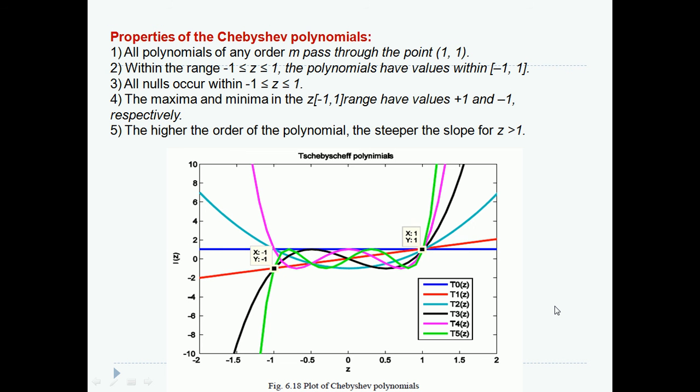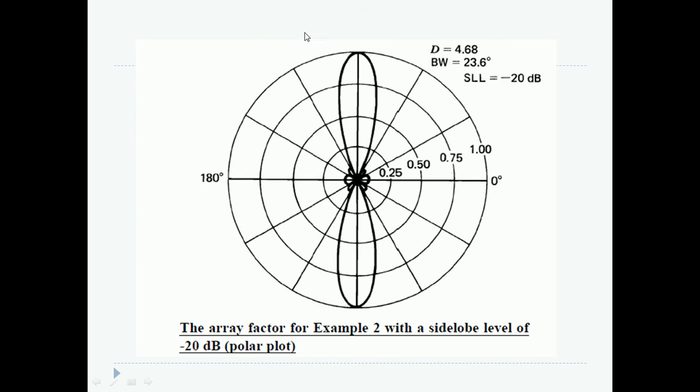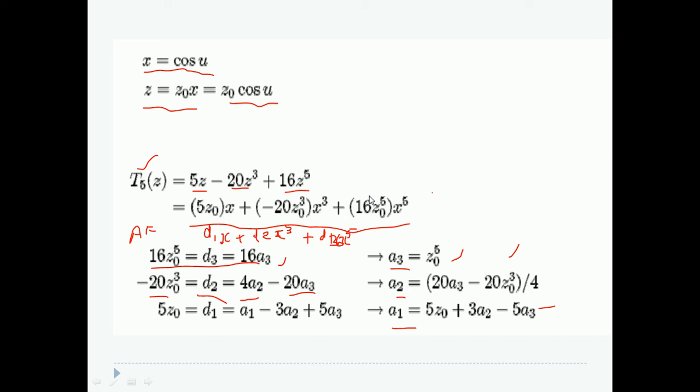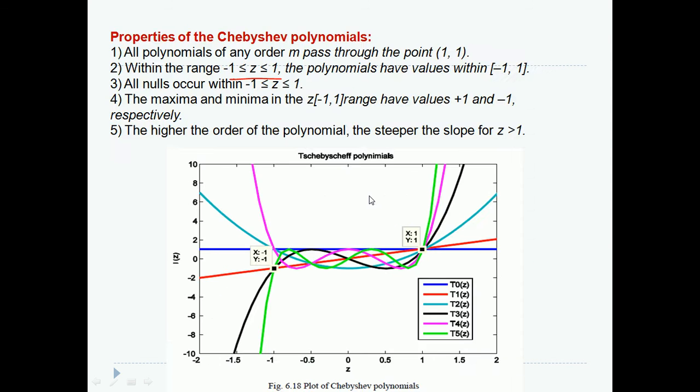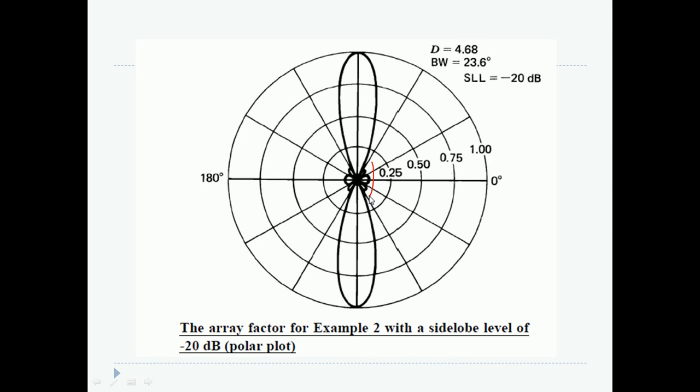For any Chebyshev polynomial, the magnitude of Z will remain between minus 1 and 1. This is the graph in which you can see that side lobe levels are very, very less than 20 dB. By feeding them in terms of Chebyshev polynomial, we can achieve the side lobe levels very, very low. Thank you.